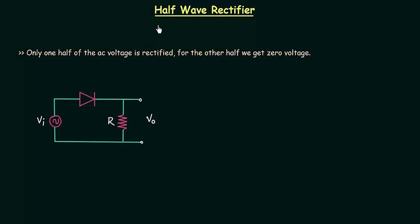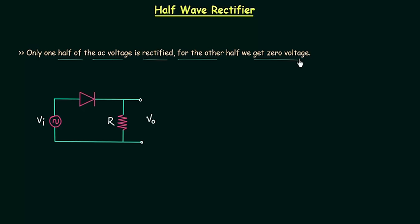In the last lecture we completed the introduction of rectifier circuits. In this lecture I will explain half wave rectifier. In case of half wave rectifier, only one half of the AC voltage is rectified. For the other half we get zero voltage. For the first half of the AC voltage we have rectified output and for the other half we get zero voltage.